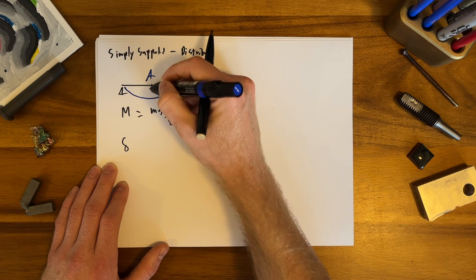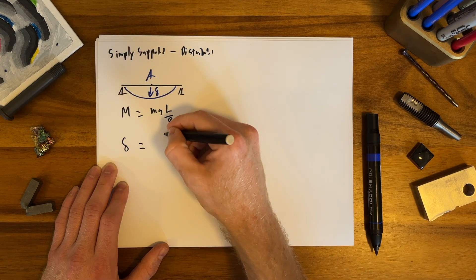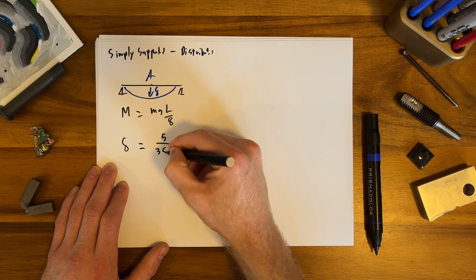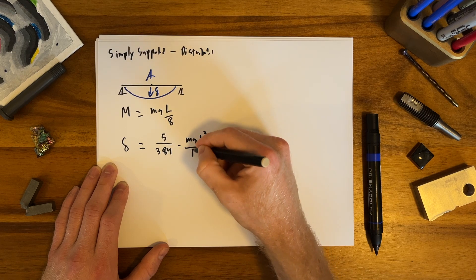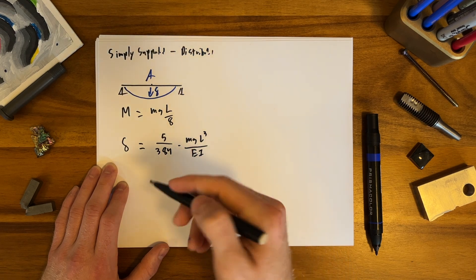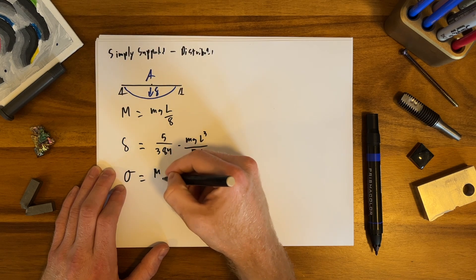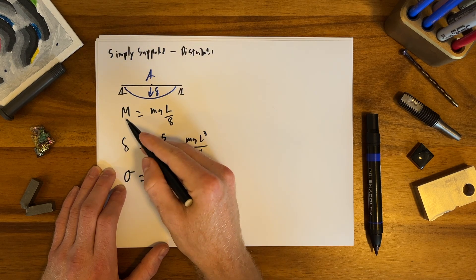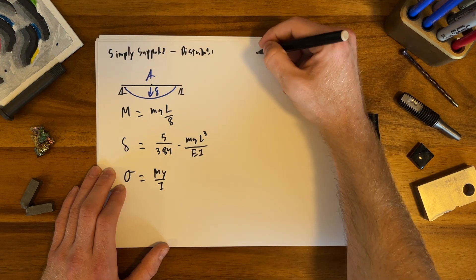The peak deflection is also in the middle, and that is equal to 5 over 384 times MgL cubed over EI. Then the actual peak stress in bending is My over I, where we use the moment and values of the cross section. Then you look on the cantilevered side.